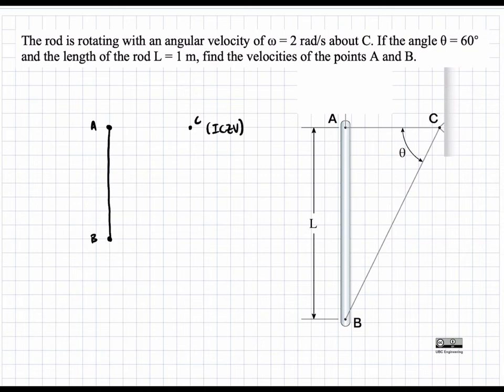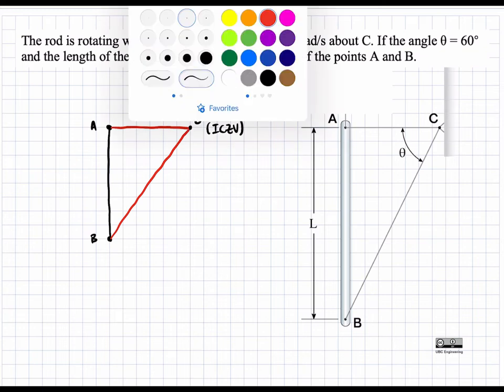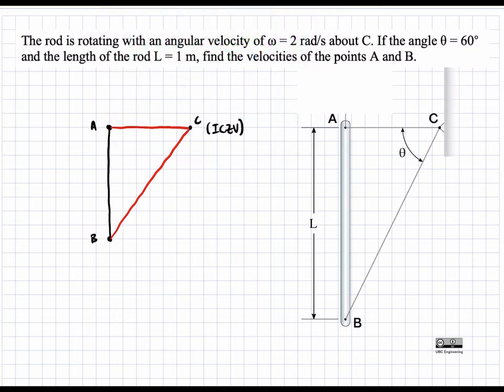So all the velocities will be with respect to this point, or just due to the angular velocity, as this point does not have any translation. If we draw the radius between A and C, and if we draw the radius between B and C, we know that the velocities will be perpendicular to this radius.